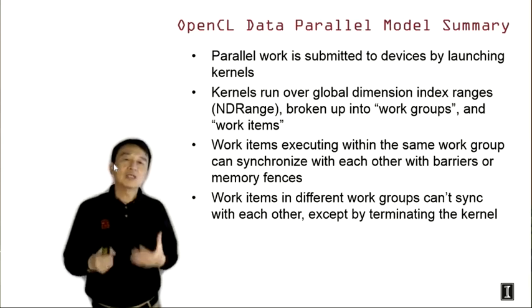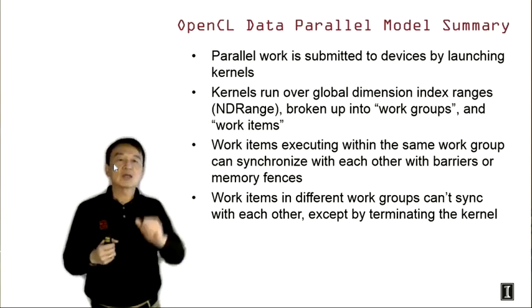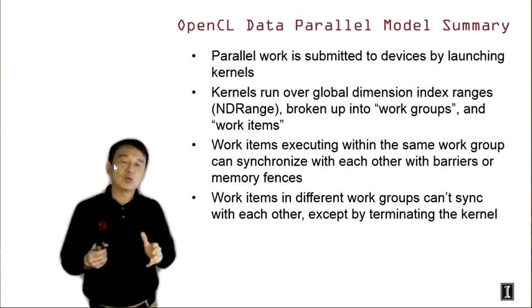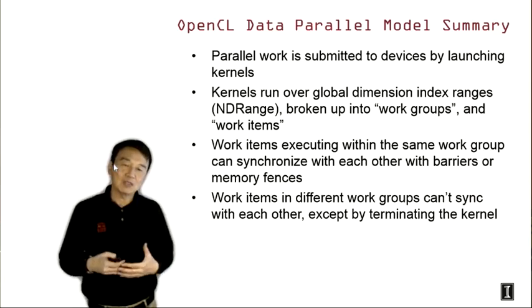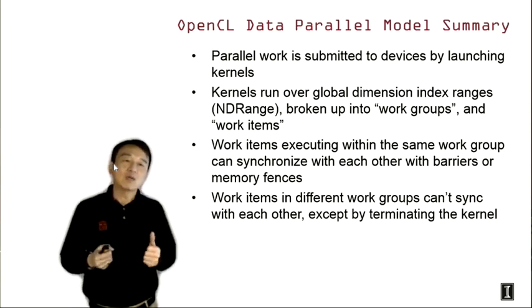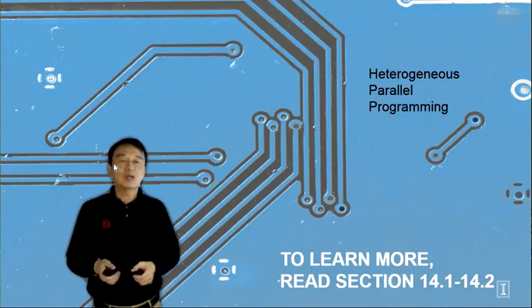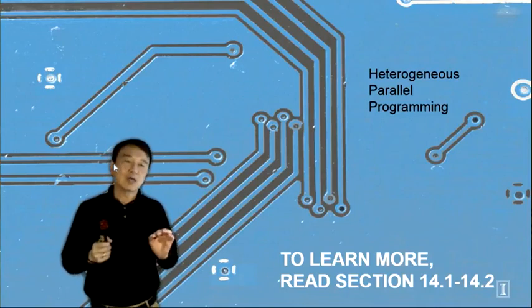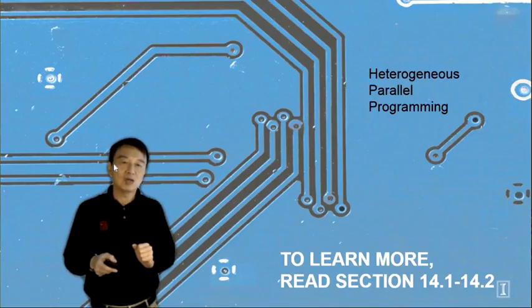To summarize the OpenCL data parallel execution model: parallel work is submitted to the device by launching kernels, just like CUDA. Kernels run over a global ND range, broken into work groups and work items. Work items in the same work group can synchronize via barriers and memory fences, just like CUDA thread blocks. Work items in different work groups cannot synchronize except at kernel termination. To learn more, please read textbook sections 14.1 and 14.2.